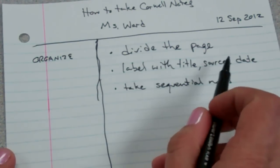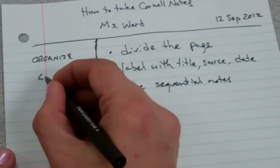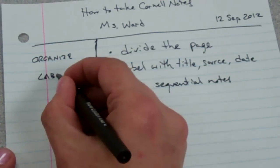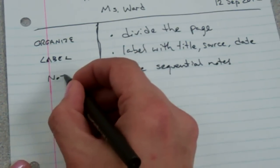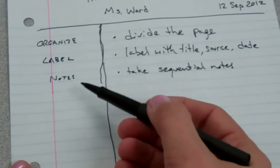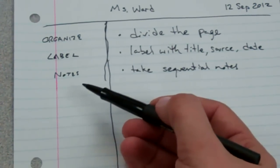And then over here, label with title, source, date. Oh, okay, good word there. Good keyword: label. And then over here, notes. So, those are all keywords that you add after the lecture is over.